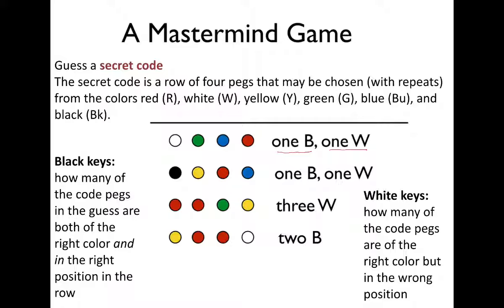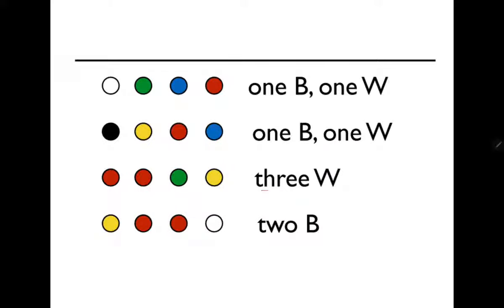Please do spend some time thinking over it. If you see here, we can start with three W. Three W means that three pegs are there which are of the correct color but at the wrong position. For example, the combination can be two reds and one green, or one red and one green and one yellow, among many other combinations — but whatever combination you choose, there must be one red. Since in the final secret code there is one red, I can say there is one red.